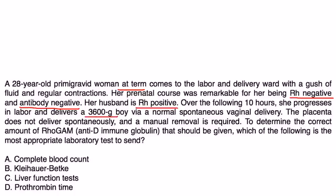Over the following 10 hours, she progresses in labor and delivers a 3600-gram boy via normal spontaneous vaginal delivery. Placenta does not deliver spontaneously and a manual removal is required. To determine the correct amount of RhoGAM anti-D immunoglobulin that should be given, which of the following is the most appropriate test to send?